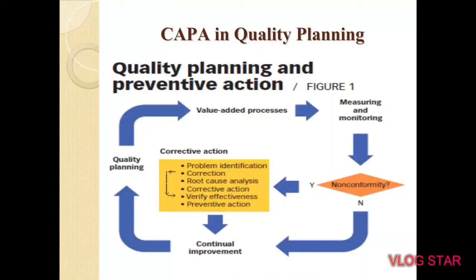CAPA is a quality improvement process in which we do necessary planning — it is actually a value-added process. In this process, continuous measuring and monitoring is performed on potential non-conformities observed in the quality system. This action and planning is performed through subsequent problem identification, necessary correction, root cause analysis, corrective action, identifying the effectiveness of that correction, and preventive action. This is the sequential process of CAPA.